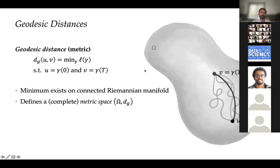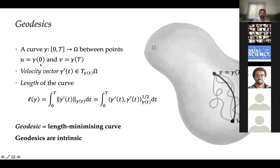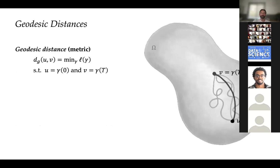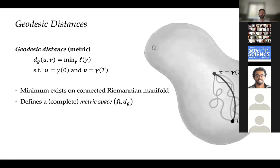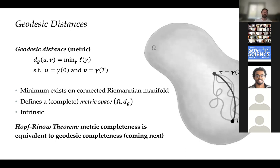The length of a geodesic is computed by integrating the velocity vectors along the curve. The particular curve that minimizes this length functional between given points is called the geodesic. This defines a complete metric space in the standard mathematical sense that every Cauchy sequence converges, and this distance is also intrinsic. There is an important result in differential geometry called the Hopf–Rinow theorem that establishes equivalence between metric completeness and geodesic completeness.